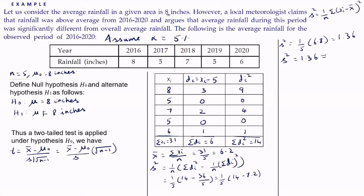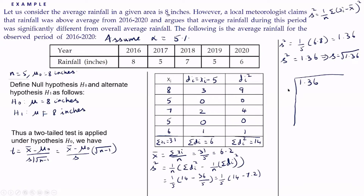We need the sample standard deviation s = √1.36. The sample standard deviation is the square root of the sample variance. In inferential statistics it is better if we know how to find the square root, because we need it frequently. It is enough to find the square root up to 2 decimal places.